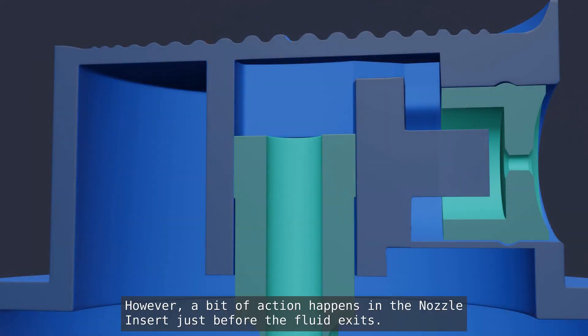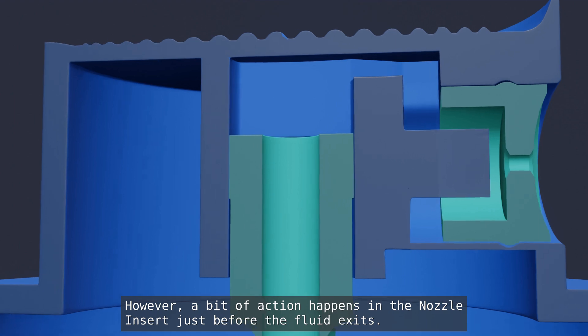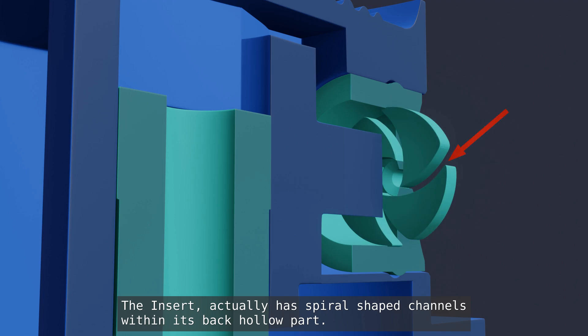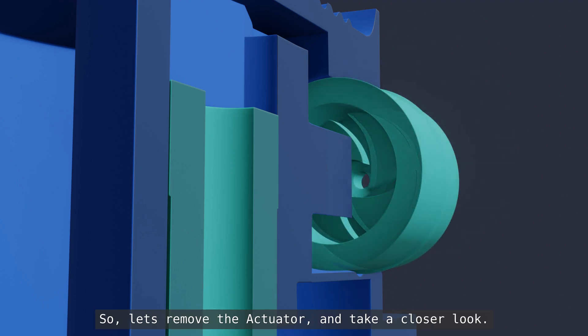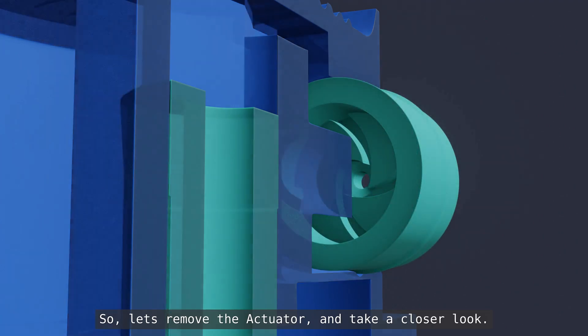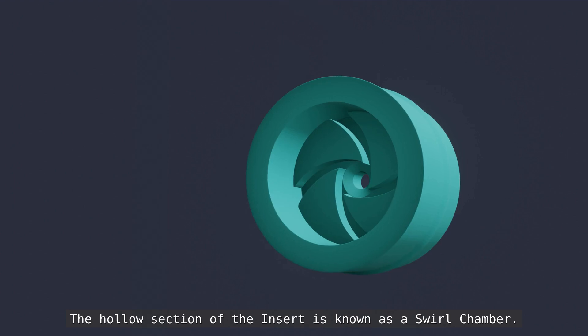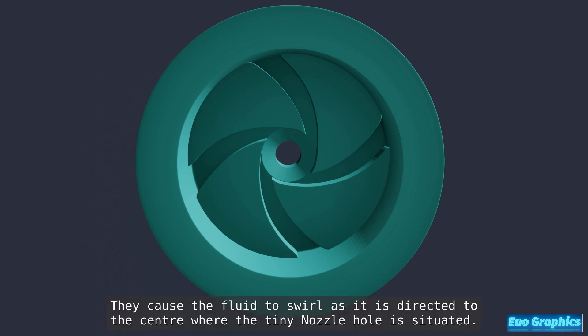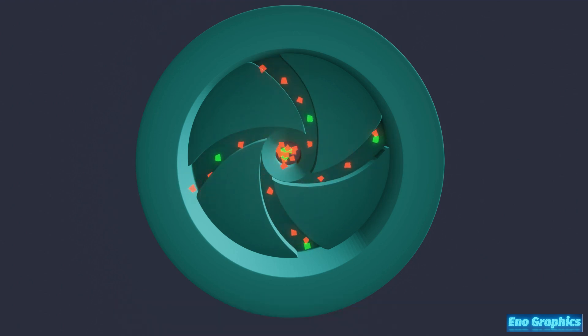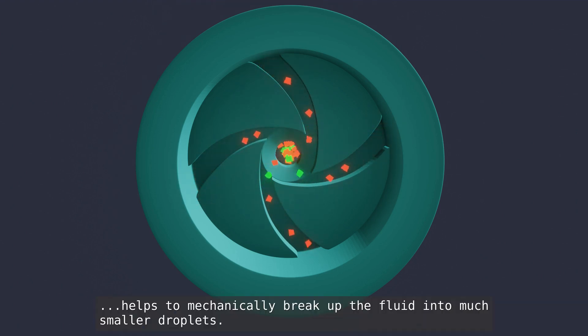However, a bit of action happens in the nozzle inset just before the fluid exits. The inset actually has spiral shaped channels within its back hollow part. So, let's remove the actuator and take a closer look. The hollow section of the inset is known as a swirl chamber. Here, we see how the channels are configured. They cause the fluid to swirl as it is directed to the center where the tiny nozzle hole is situated. This swirling action helps to mechanically break up the fluid into much smaller droplets.